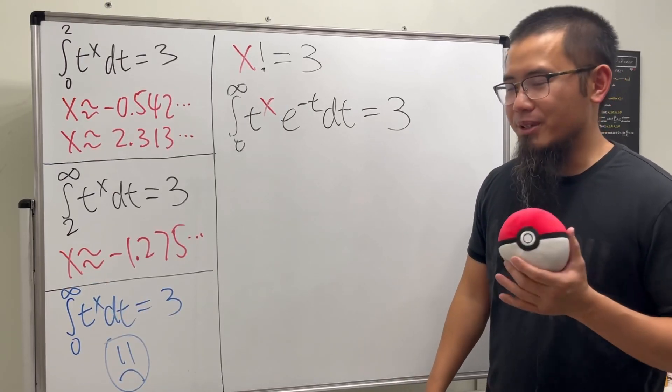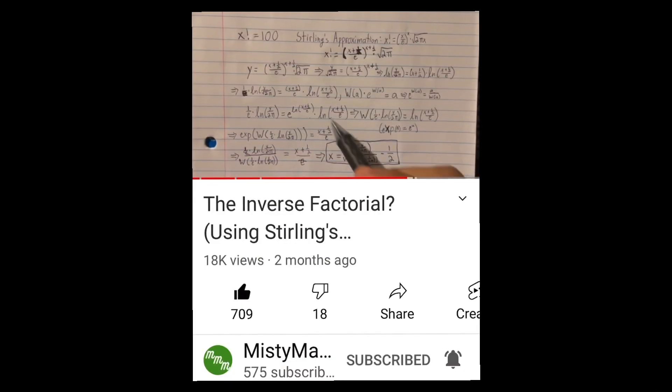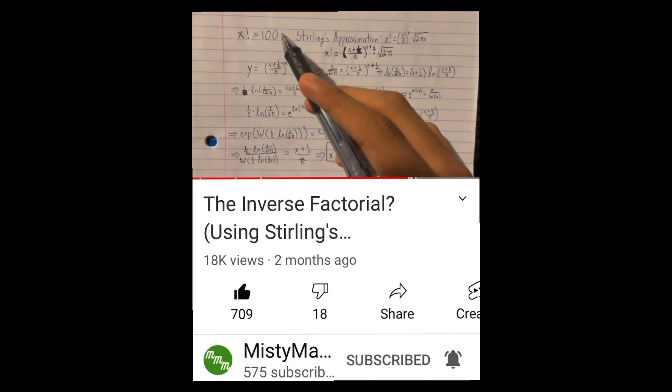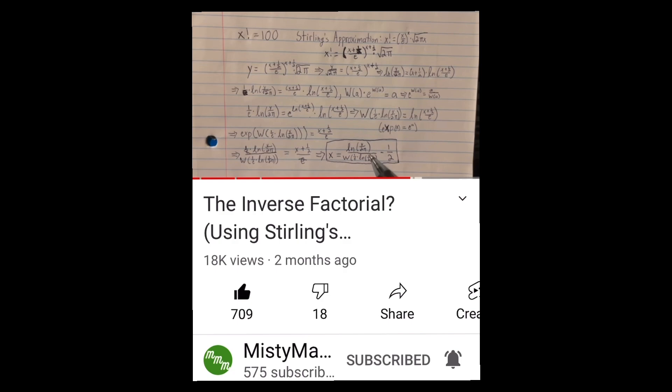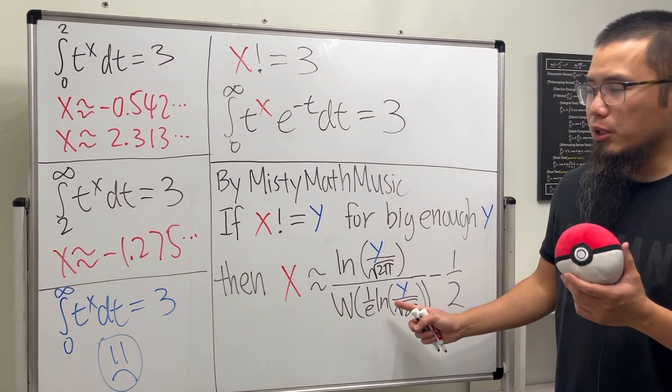He participated in my summer rising star math YouTuber challenge, so go ahead and check that out. He used the Lambert W function as well. We can say that if we wanted to solve x factorial equals 100, we just plug this 100 into this y over here and this y over here, and we should get a close enough answer to x.